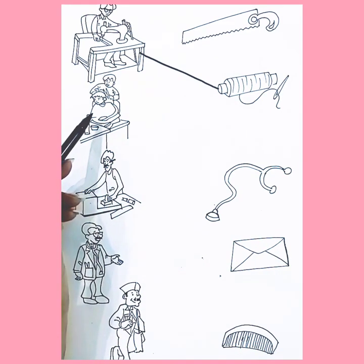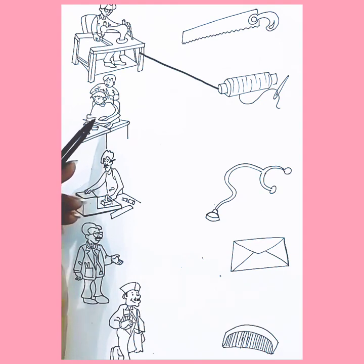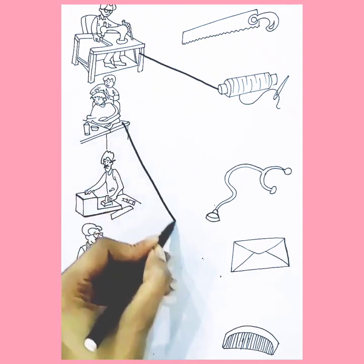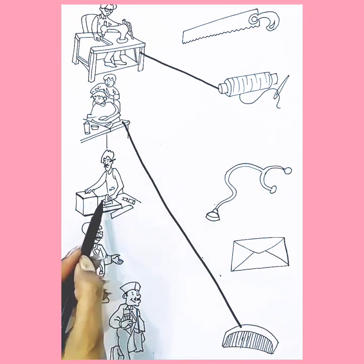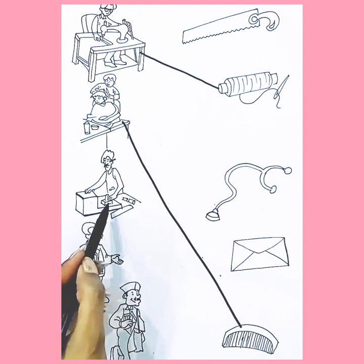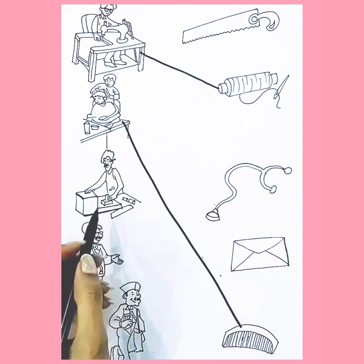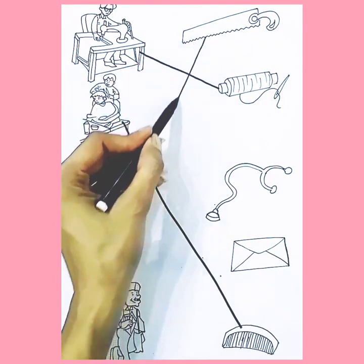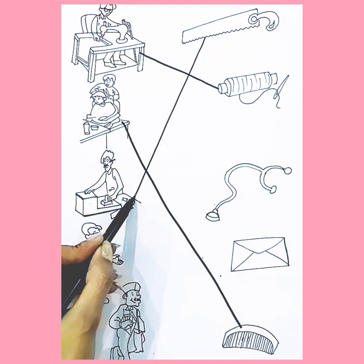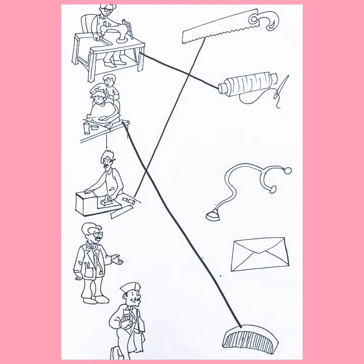Now, who is next? Yes, he is a hairdresser, and a hairdresser cuts our hair. Come to the next picture — he is a carpenter. A carpenter uses a woodcutter tool.